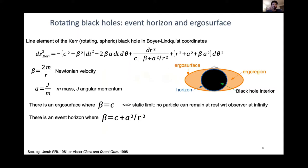A black hole that rotates is slightly more complicated. The simplest rotating, non-charged, spherical black hole is called the Kerr black hole, written here in Boyer-Lindquist coordinates. The rotating black hole has an event horizon, and it also has another surface called the ergo surface — shown here in orange. The ergo surface is further out from the center; inside it, a particle cannot remain at rest with respect to an observer at infinity. If the particle then crosses the event horizon, it falls into the black hole interior.